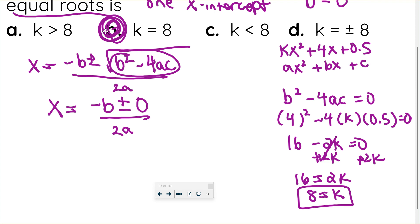But what does that actually mean? Well, if you go back to your quadratic, kx squared plus 4x plus 0.5, that means 8x squared plus 4x plus 0.5.